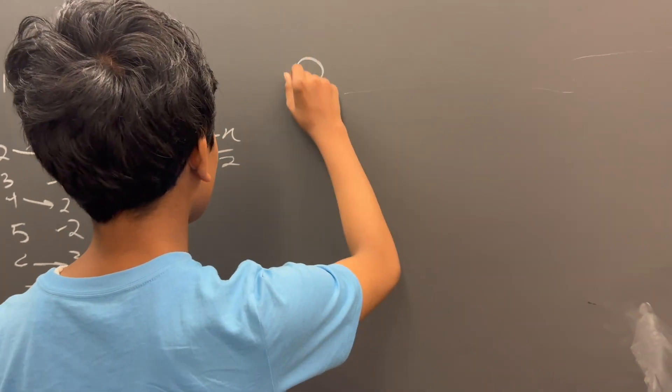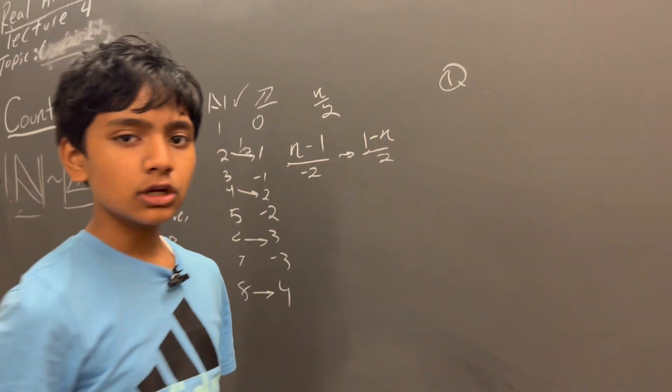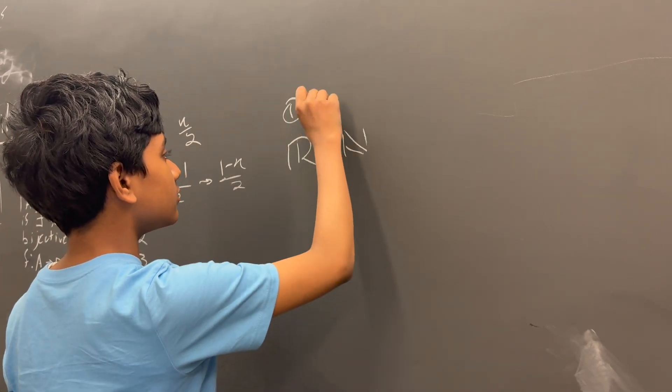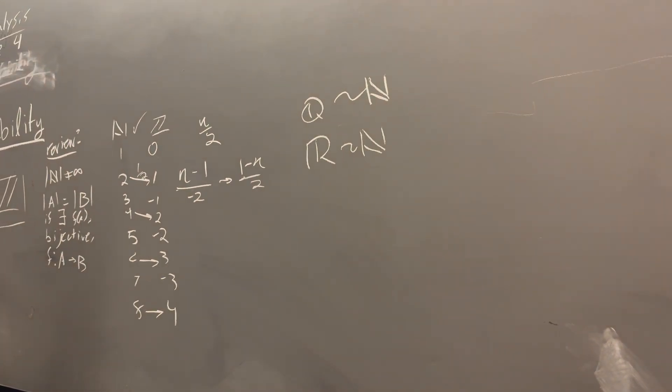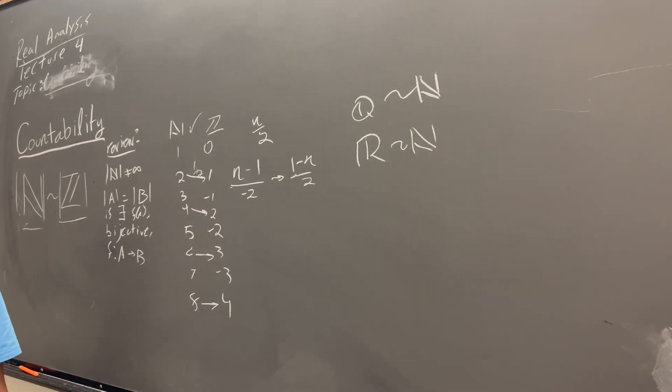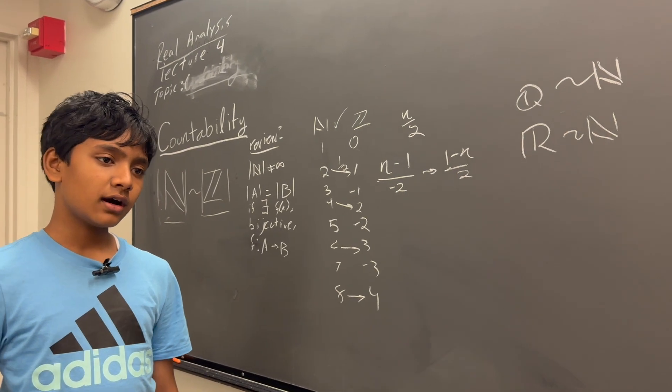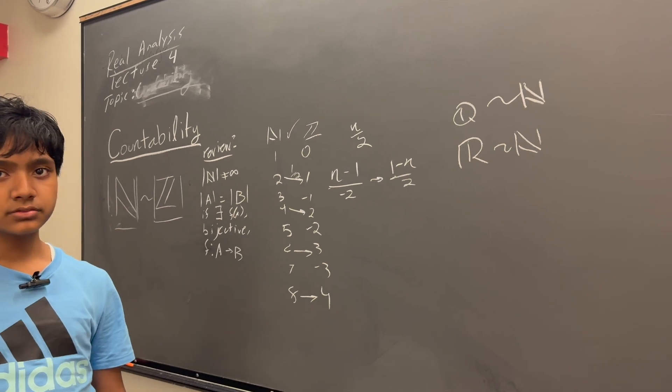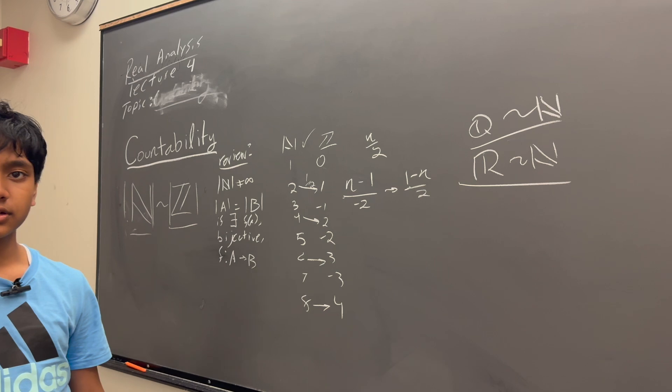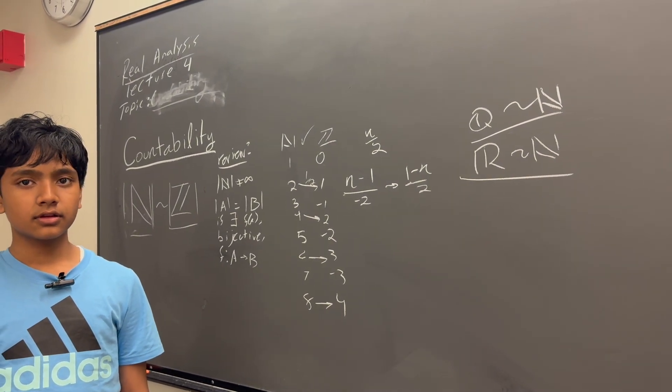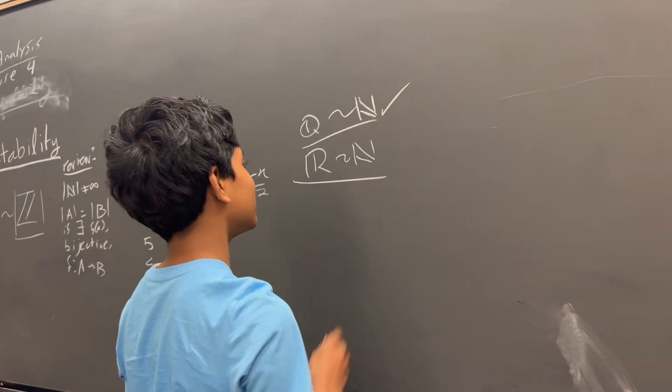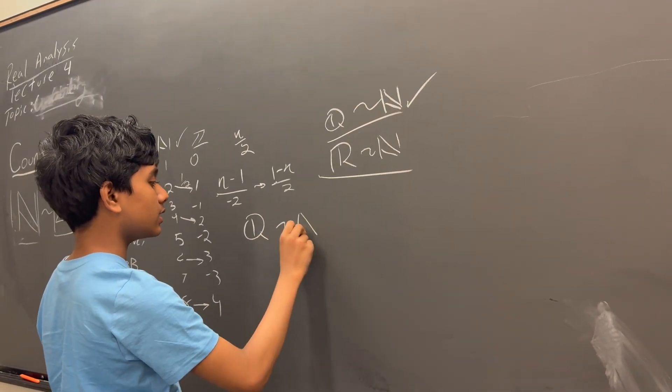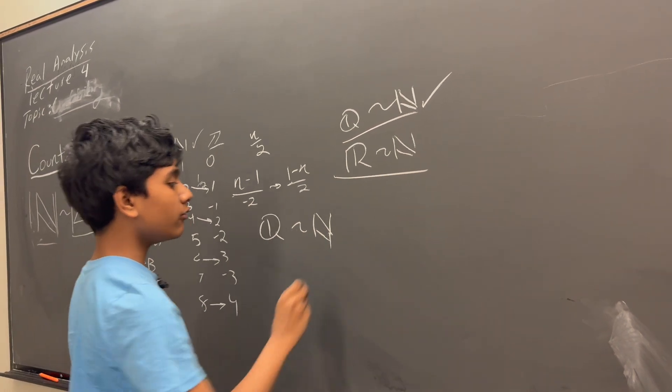Now, it turns out that the rational numbers are actually... I'll give you some statements. Which one do you think is true? The rationals are congruent to the natural numbers or the real numbers are congruent to the naturals? They have the same cardinality. The rational numbers are congruent to the natural numbers. What we call this is countable.